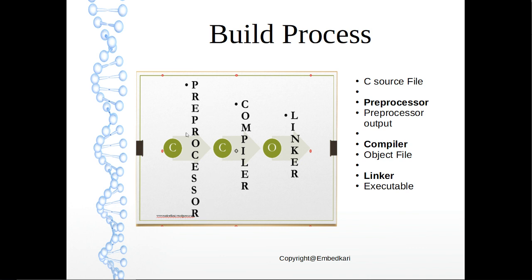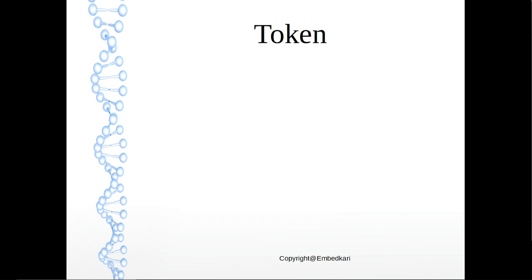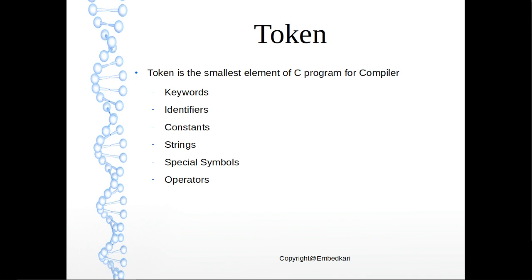While doing experiments, we'll understand what kind of output the preprocessor will provide. The preprocessor will basically replace a lot of readable text items with corresponding data. That is one quick understanding I can provide you. And what is a token in terms of the compiler? A token is the smallest element of a C program for the compiler.